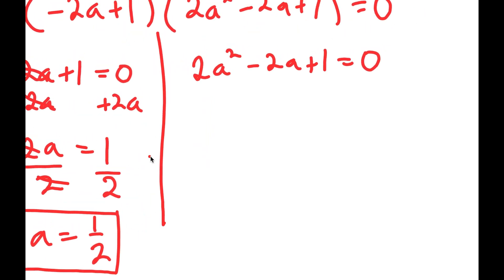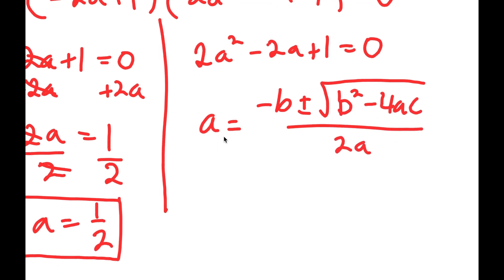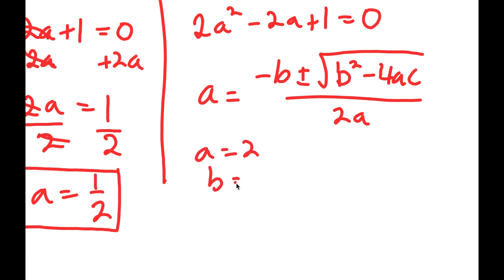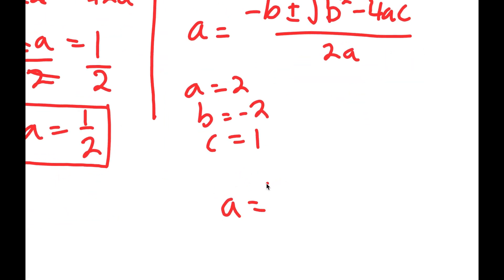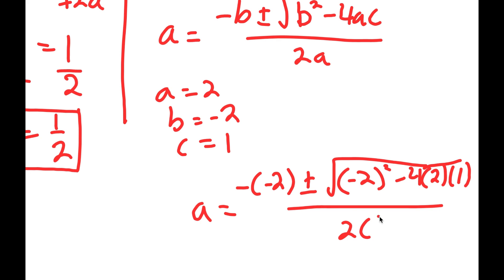For 2a squared minus 2a plus 1, I'm going to use the quadratic formula, because this is a quadratic equation. The quadratic formula is negative b plus or minus the square root of b squared minus 4ac, all over 2a. In this case, a is 2, b is negative 2, and c is 1. Plugging these values in, I get negative of negative 2 plus or minus the square root of negative 2 squared minus 4 times 2 times 1, all over 2 times 2.